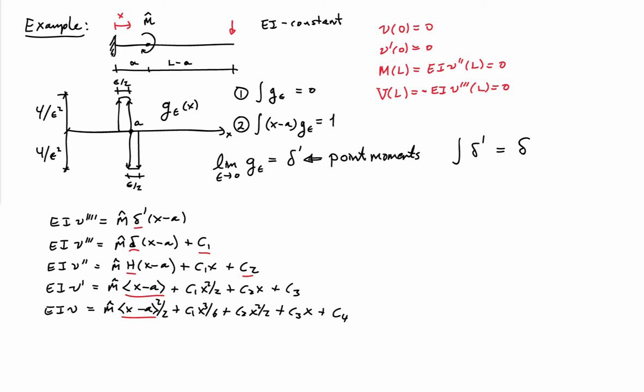We can apply these boundary conditions to determine the constants. Let's use the deflection at 0 equals 0, and that tells me immediately that C4 equals 0. If I use the fact that the rotation is 0 at x equals 0, I see that C3 equals 0. Now, if I use the moment condition at x equals L, I find that m hat times 1 plus C1L plus C2 equals 0. So that's an equation in two unknowns, C1 and C2, so we'll leave that one.